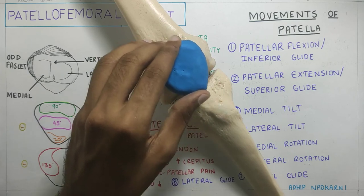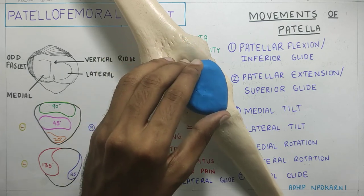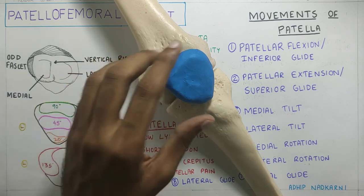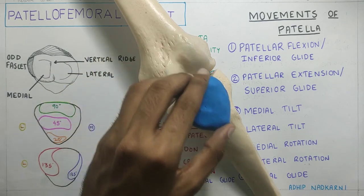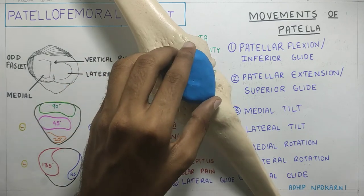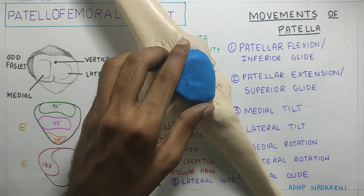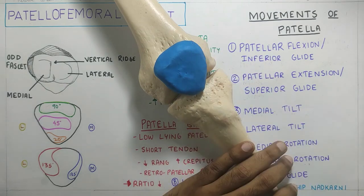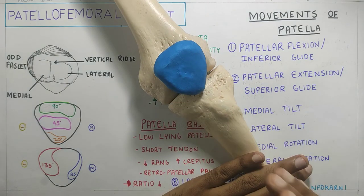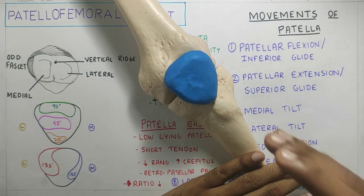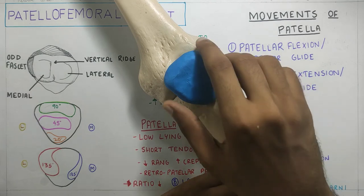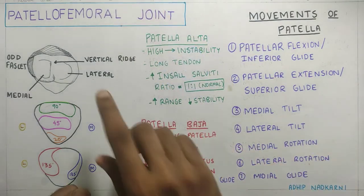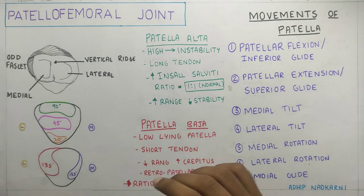For example, during extension if the patella cannot glide superiorly, it will hamper the knee range of motion. During flexion, if it does not glide inferiorly, it can reduce the flexion range of motion. Hence patellar mobility is very important, and in clinical practice we should always check patellar mobility to rule out the patella as the cause of restricted knee range of motion.